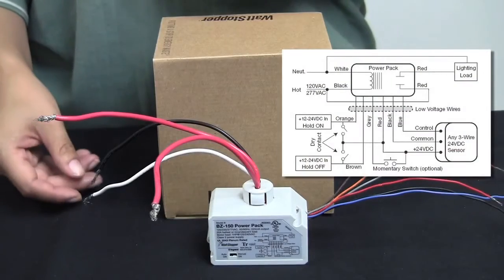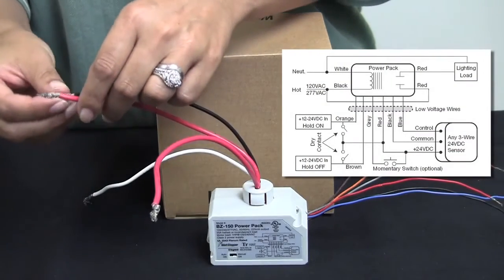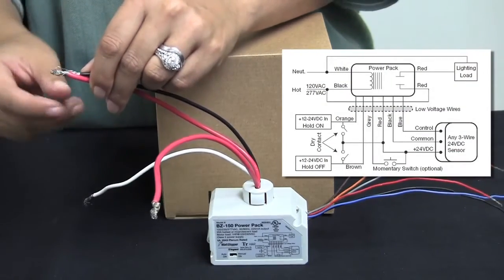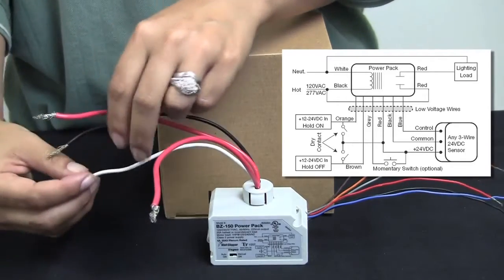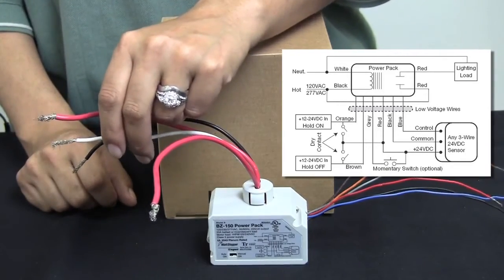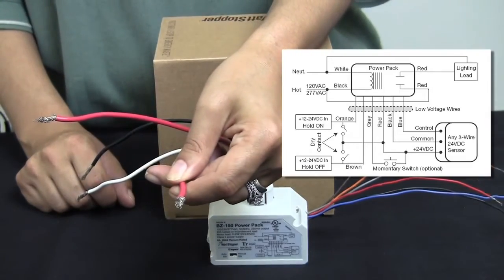When wiring your BZ150, you'll take the black lead and one of the red leads and wire them to your incoming hot, you'll wire the white wire to your neutral, and then you'll take the red wire and wire it to your load.